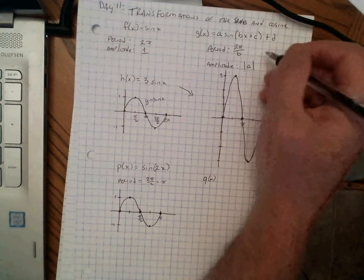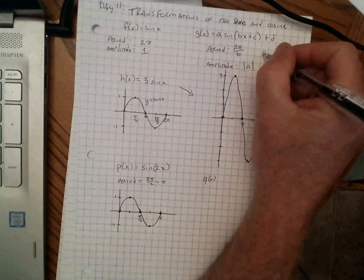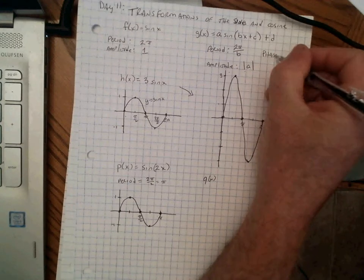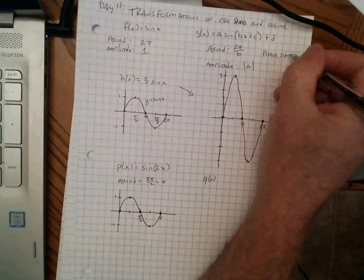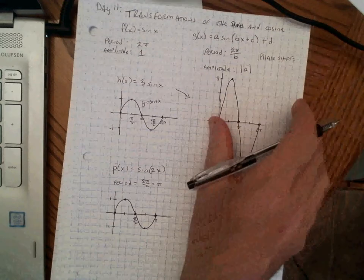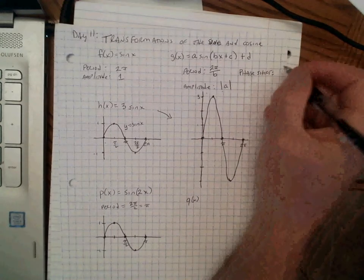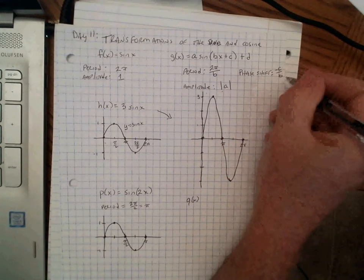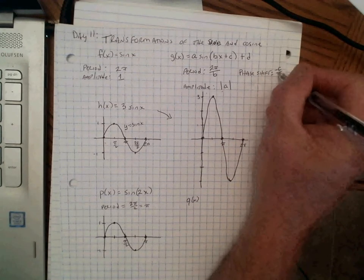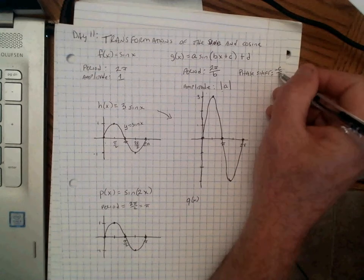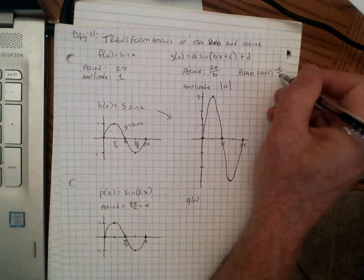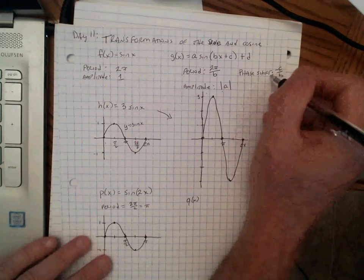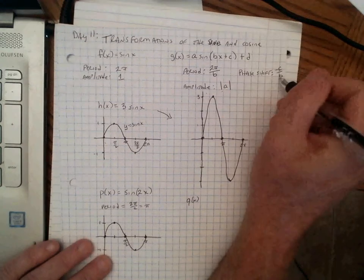Now, what about c and d? We call c the phase shift — it's really a horizontal shift. The phase shift is negative c over b. If this turns out to be a negative number, it's a shift to the left. If it's a positive number, it's a shift to the right.